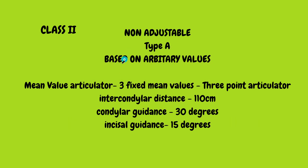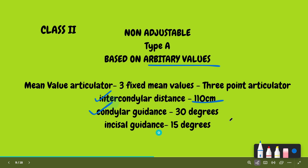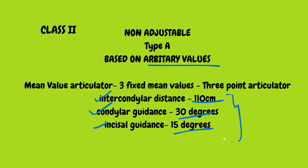Type A is dependent on arbitrary average values. The mean value articulator depends on three fixed mean values, which is why it is also known as a three-point articulator. Intercondylar distance is assumed to be 110 mm, condylar guidance is assumed to be 30 degrees, and incisal guidance is assumed to be 15 degrees. All three are average values of the range present in patients, so there are no adjustable features.